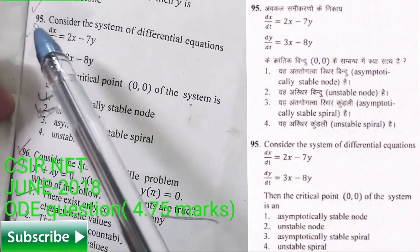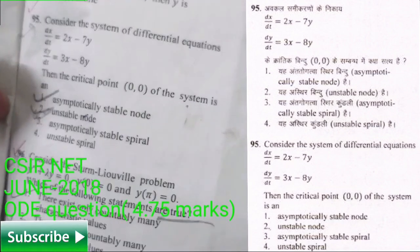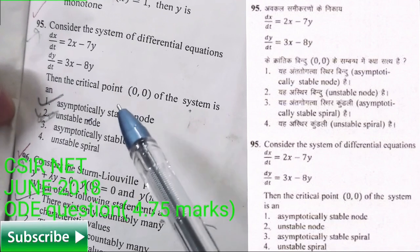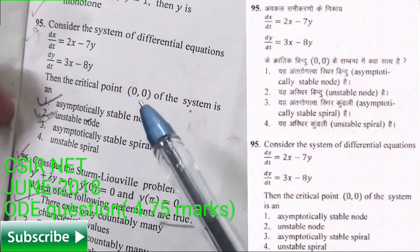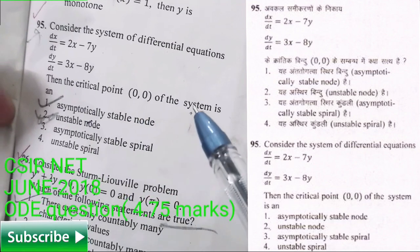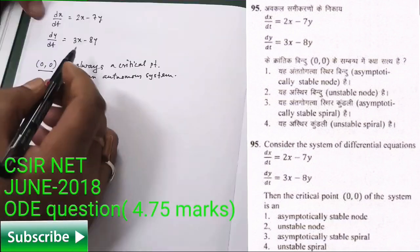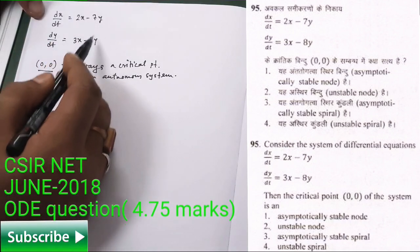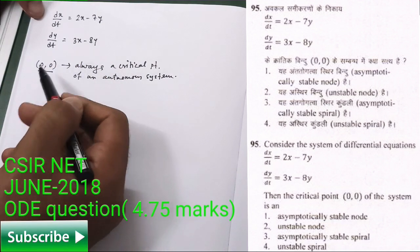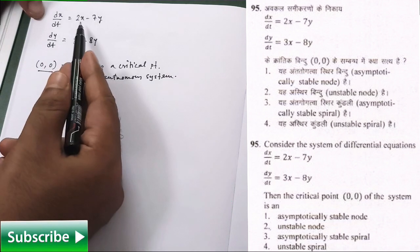Today we are going to solve problem number 95. It was asked in CSIRnet June 2018. Look carefully that they have given us a system of linear differential equations and the critical point of that system is given to us as (0,0). Depending upon this data they are asking what is the nature of that critical point. This system of linear differential equations is given to us and (0,0) is given as critical point of this system.